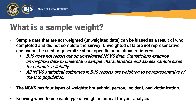BJS does not report out on unweighted sample data. Statisticians examine unweighted data to understand sample characteristics and assess sample sizes for estimate reliability. All NCVS statistical estimates published in BJS reports are weighted to be representative of the U.S. population. The NCVS has four types of weights: household, person, incident, and victimization. Knowing when to use each type of weight is critical for your analysis.